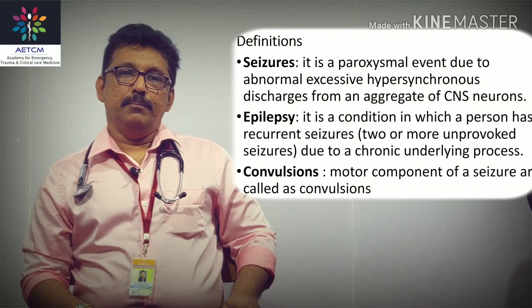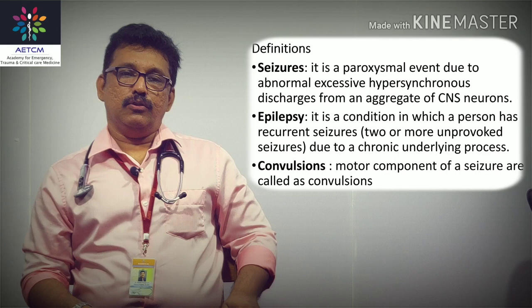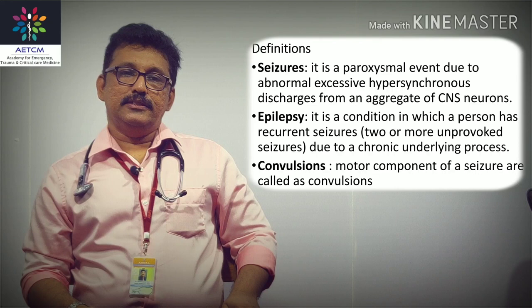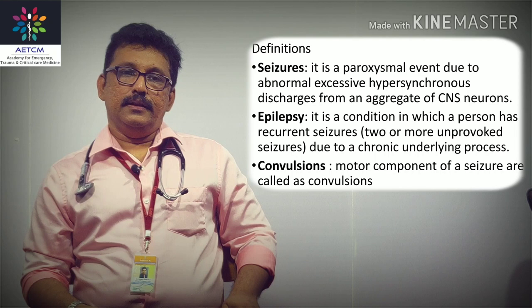Today we will discuss status epilepticus, beginning with some key definitions. A seizure is a paroxysmal event due to abnormal and excessive hypersynchronous discharge from an aggregate of CNS neurons — essentially an excessive hypersynchronous electrical discharge from CNS neurons.